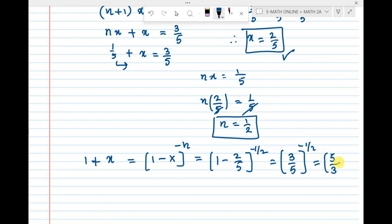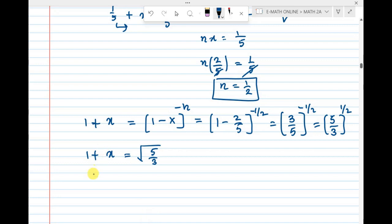Therefore, 1 plus x equal to root over 5 by 3. Square root, so do whole square on both sides. 1 plus x whole square equal to 5 by 3.